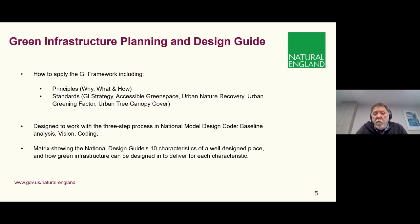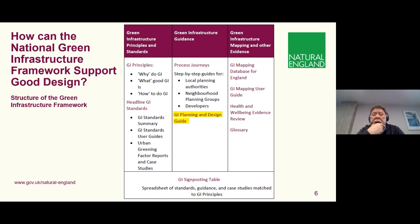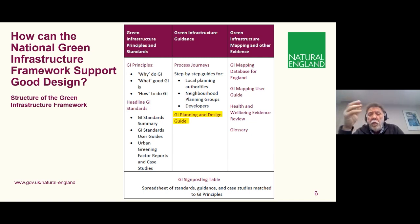It is designed to work with design codes and the national model design code. We'll come on to the national design guide's 10 characteristics of well-designed places and how this intersects with that. This is a useful way of perhaps seeing how this fits together. We've got the principles, we've got the standards, and it's also worth noting at this point that there's a huge amount of information available underpinning this. You've got the mapping database for England and there are reviews, plus a whole host of authoritative documents, peer reviewed papers, which are referred to and linked in the document. So it's worth clicking on these links when you see them in the text, because that will give you the background for what might be a summary of what we're saying.